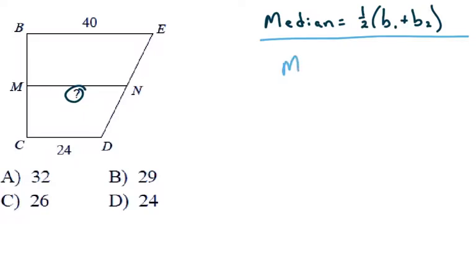So the median equals 1 half of base 1. Base 1, we'll say is 24, plus base 2, which is 40.